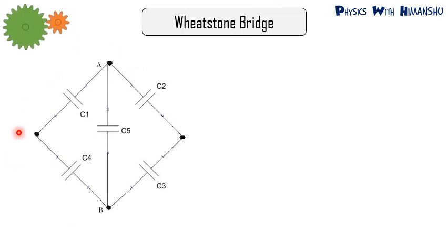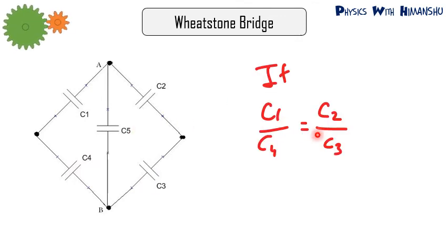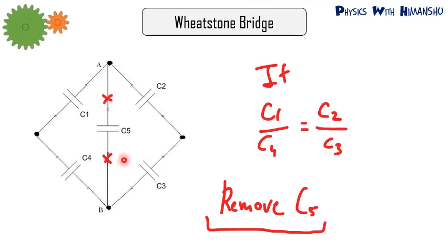An important circuit for competitive exams: suppose we have five capacitors C1, C2, C3, C4, and C5. If C1/C4 = C2/C3, then you can remove C5 — this is called the Wheatstone bridge condition. When C5 is removed, C1 and C2 are in series, C4 and C3 are in series, and these two series combinations are in parallel. You can then solve the simplified circuit.